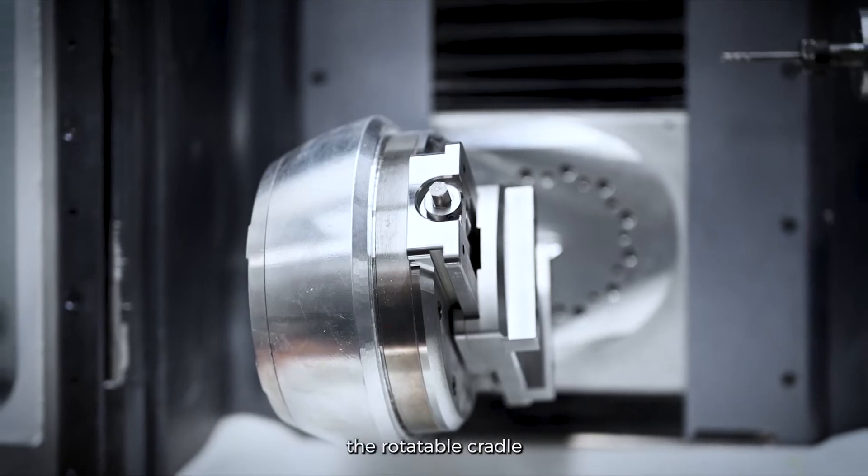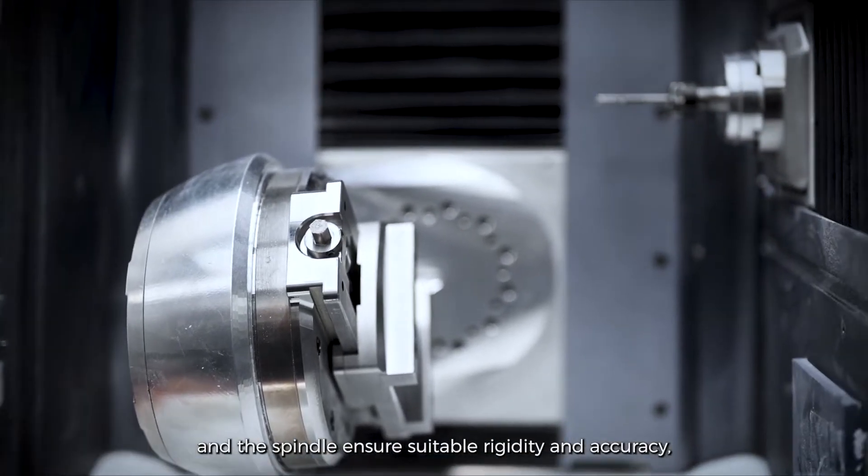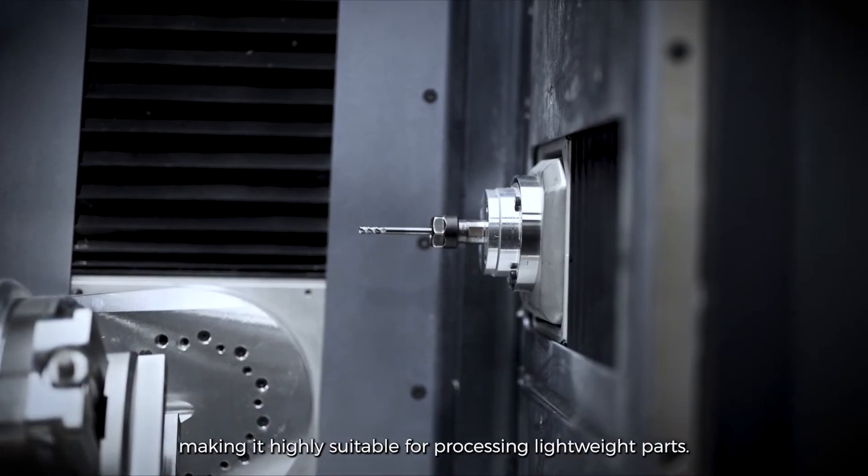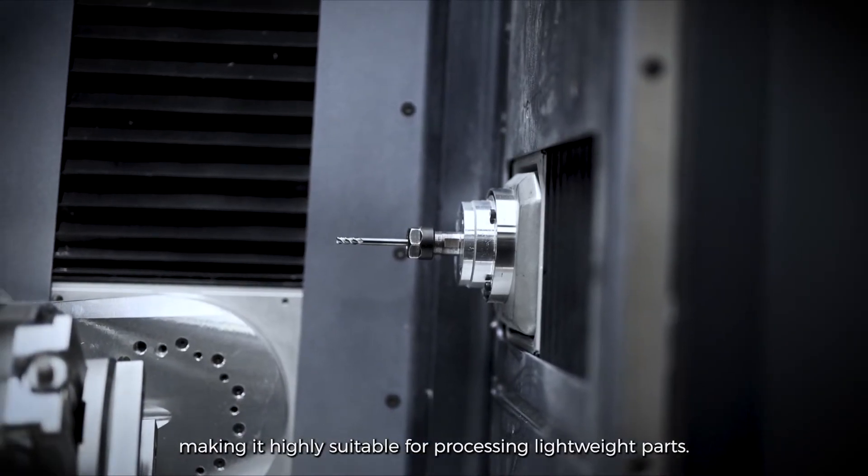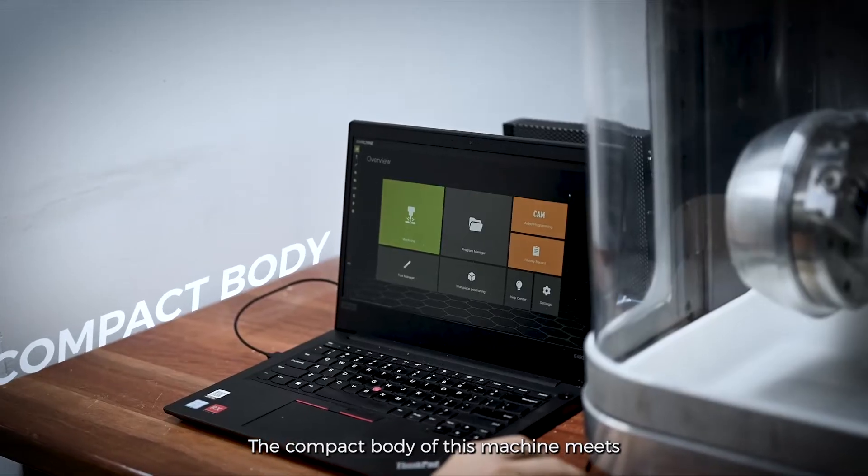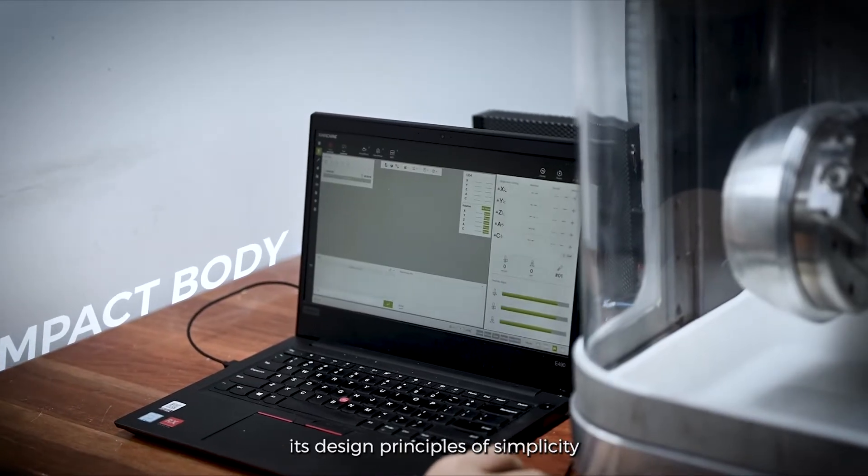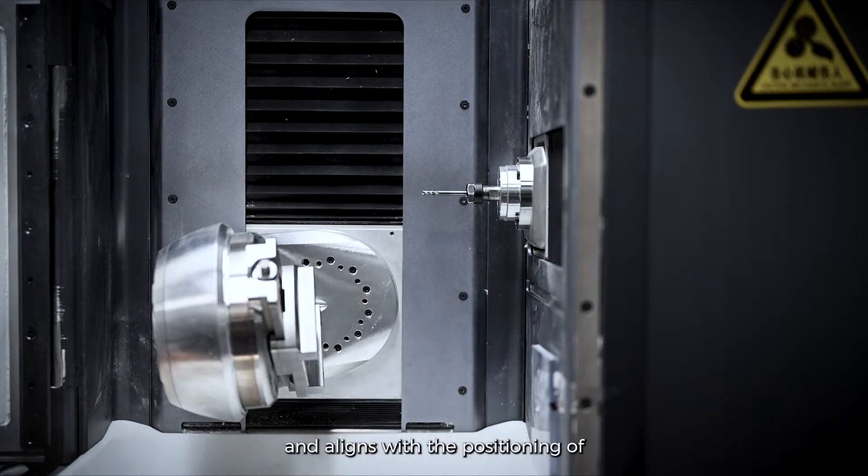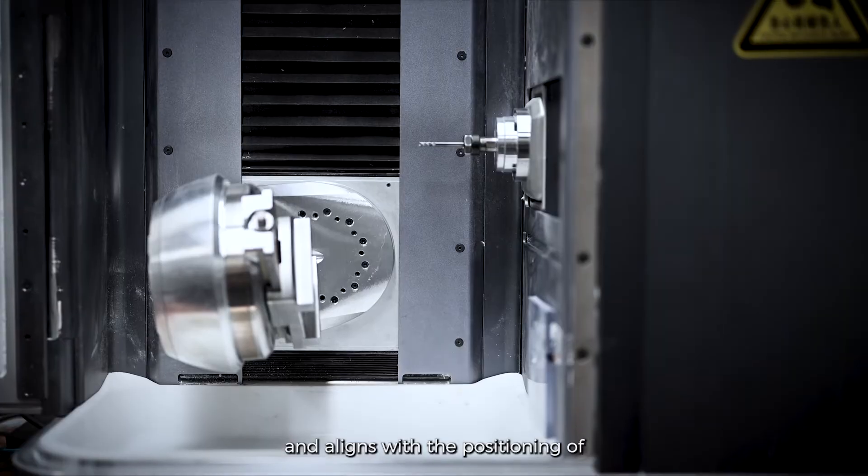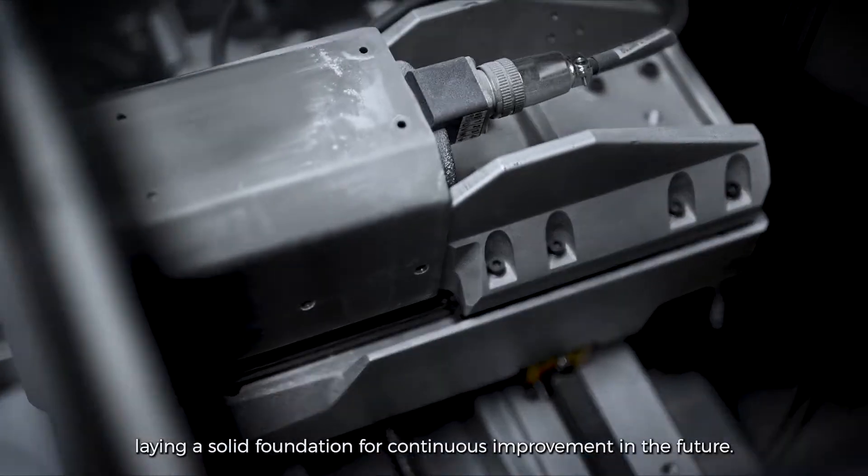In addition, the rotatable cradle and spindle ensure suitable rigidity and accuracy, making it highly suitable for processing lightweight parts. The compact body of this machine meets its design principles of simplicity in alliance with the positioning of its desktop 5-axis milling machine, laying a solid foundation for continuous improvement in the future.